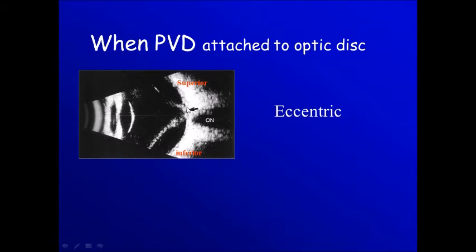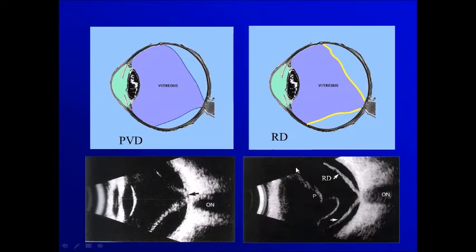We notice that if there is attachment between the posterior vitreous detachment and the optic disc, this attachment is eccentric — it's not in the middle of the disc. This is important to separate between retinal detachment, where the membrane is centered to the disc, and posterior vitreous detachment still attached to the disc, where the membrane is in an eccentric position.